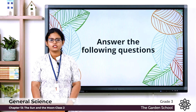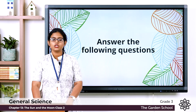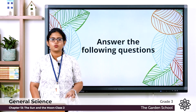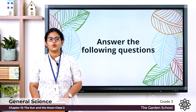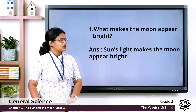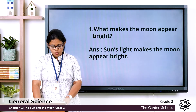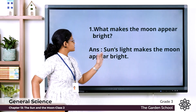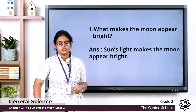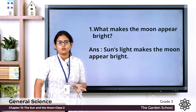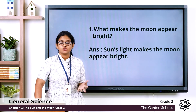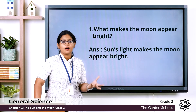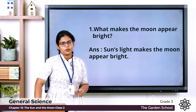Moving to the third exercise — answer the following questions. There are four questions. Once we discuss the answers, you can write them in your notebook. First question: what makes the moon appear bright? Sun's light makes the moon appear bright. The moon is the brightest object in the night sky but does not have light of its own — sunlight makes it appear bright.